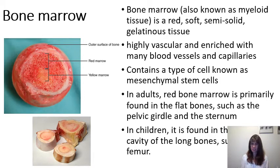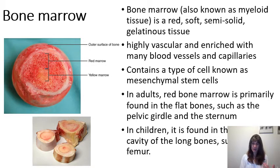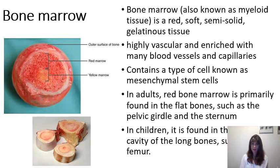As people age, they get more adipose connective tissue and less of the red myeloid connective tissue, and the ratio continues to change as they get older. Interestingly, if a person has an injury causing hemorrhaging and loses a lot of blood, the body will reconvert some of that yellow marrow into red marrow to help produce more blood cells.